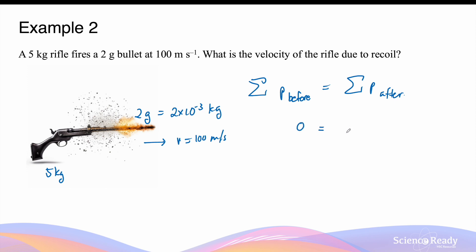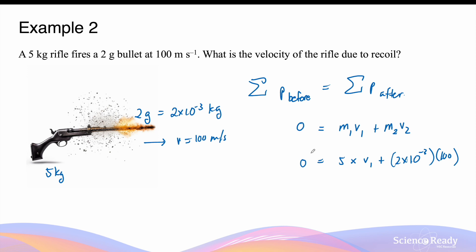After the rifle was fired, the total momentum is given by m1 times v1 — the mass of the rifle times its velocity — plus m2 times v2, where m2 is the mass of the bullet and v2 is the velocity of the bullet. The mass of the rifle is 5 kilograms and the velocity is what we are calculating, plus the mass of the bullet — 2 times 10 to the power of minus 3 kilograms — multiplied by its velocity of 100 meters per second. All of this equals zero, the total momentum before the rifle is fired. We get minus 0.2 equals 5 v1, so v1 equals minus 0.04 meters per second. This means when the bullet was fired at 100 meters per second to the right, the gun experiences a recoil backwards at 0.04 meters per second.